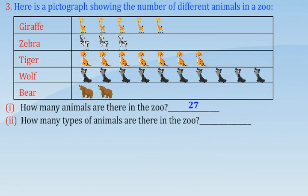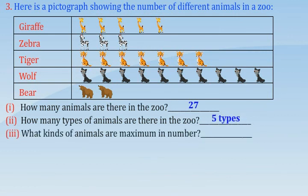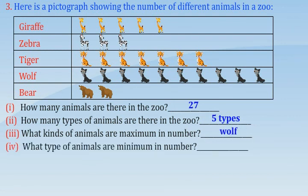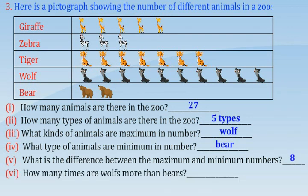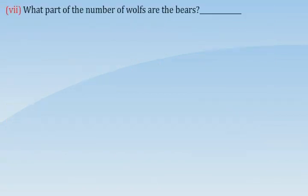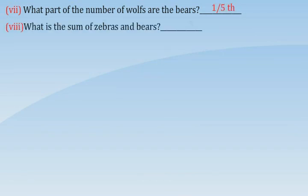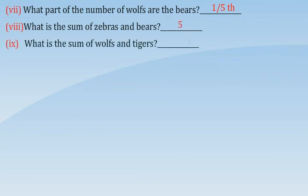How many types of animals are there in the zoo? What kinds of animals are maximum in number? What type of animals are minimum in number? What is the difference between the maximum and minimum numbers? How many times are wolves more than bears? What part of the number of wolves are the bears? What is the sum of zebras and bears? What is the sum of wolves and tigers?